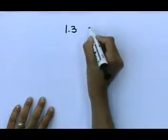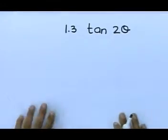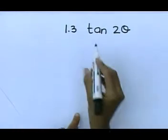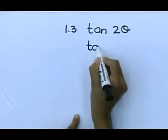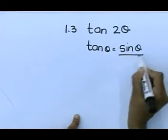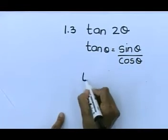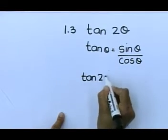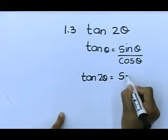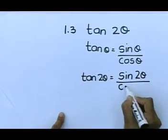1.3 asked us to go and find the tan of 2 theta. I'm going to start by saying that all of us know that tan theta is sin theta over cos theta. We all know that. So very simply, tan 2 theta is equal to the sin of 2 theta divided by the cos of 2 theta.